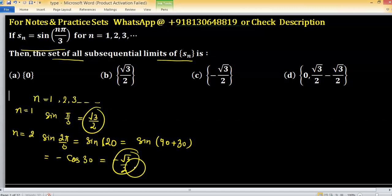The first term is root 3 by 2. And in this fashion you can check the third term will be 0, fourth term will be minus root 3 by 2, and again minus root 3 by 2, and then 0. This sequence follows this pattern.